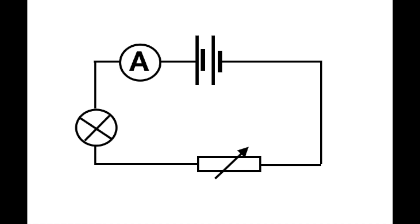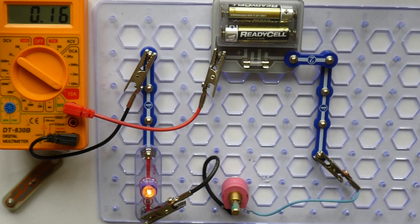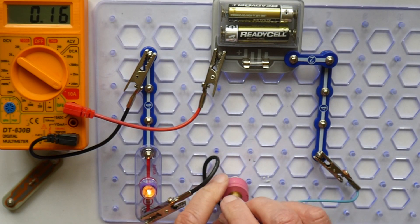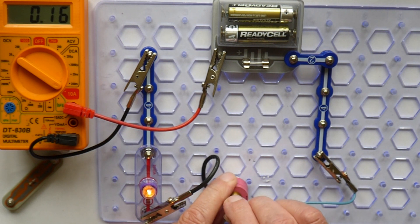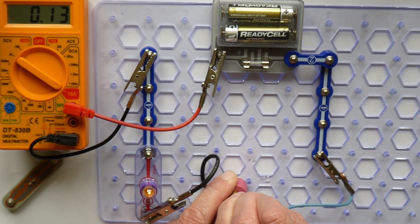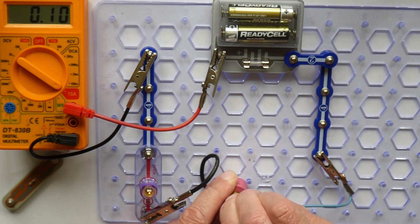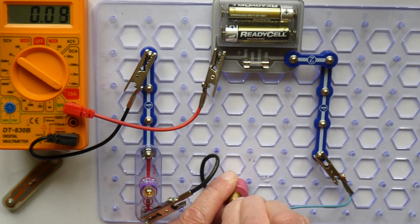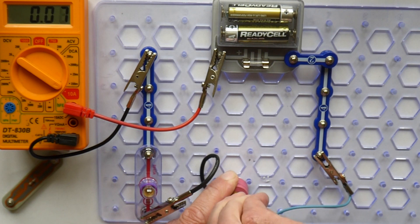box with an arrow through it representing the variable resistor. As we turn the control on the variable resistor, we can change the current flowing. We reduce it — you can see the bulb is dimmer and the reading on the ammeter is